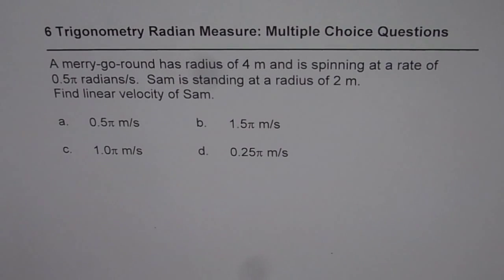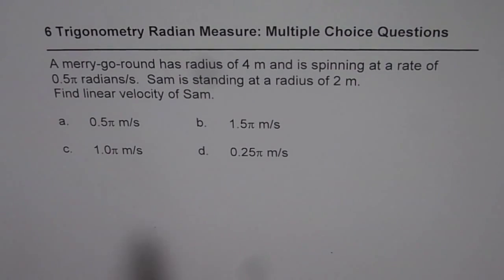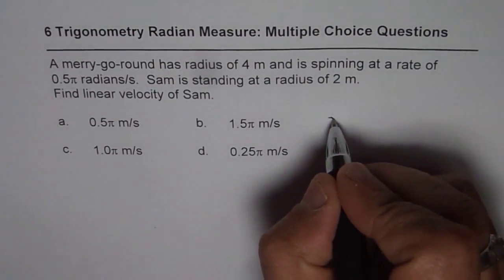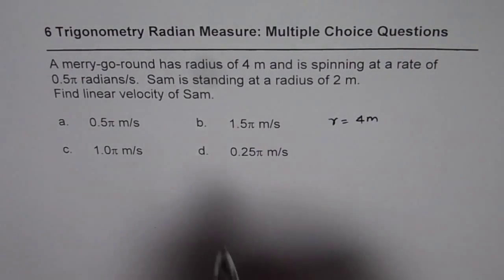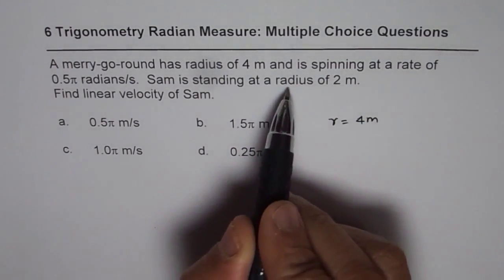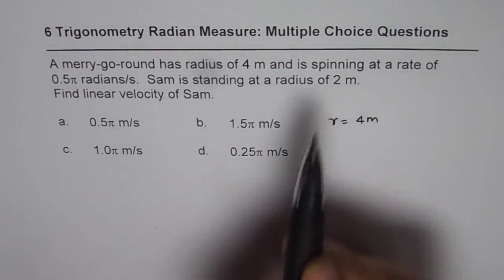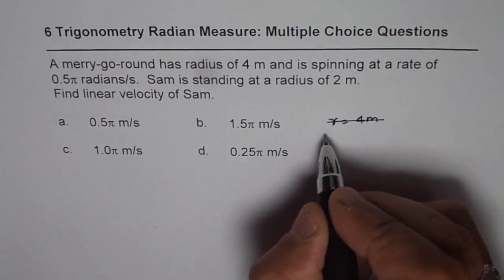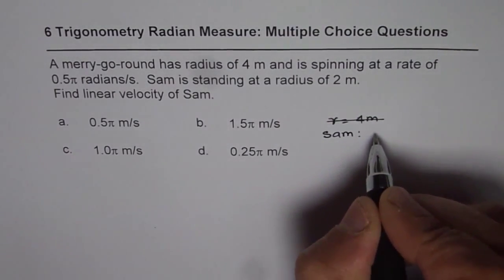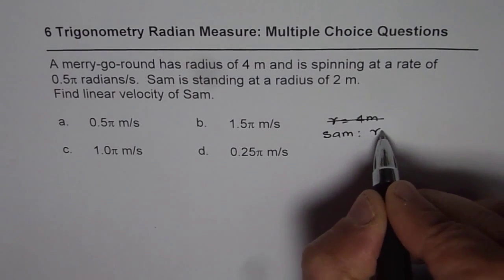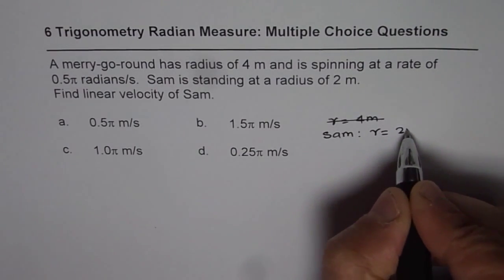We are given 4 choices. I'd like you to pause the video, answer the question and then check with my answer. Now in this question we are given radius as 4 meters, but we are given Sam is standing at a radius of 2 meters. So we have to consider Sam's velocity. So for Sam, the distance from the center — r — is 2 meters.